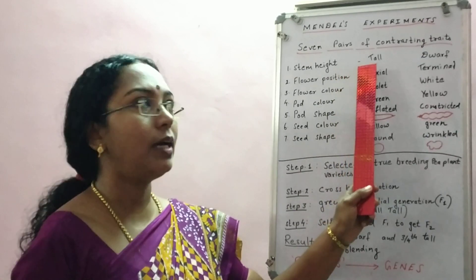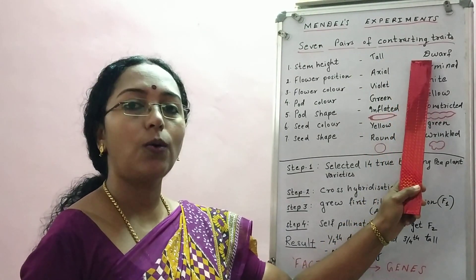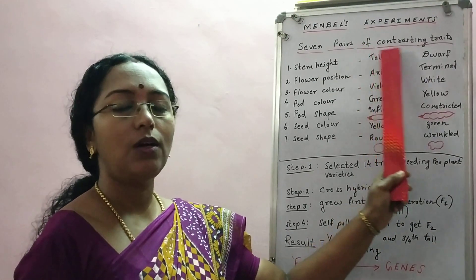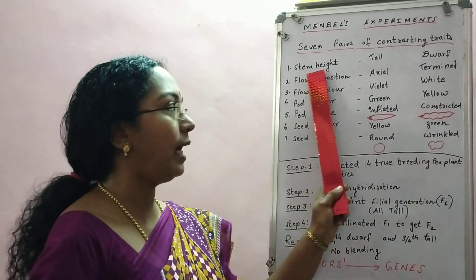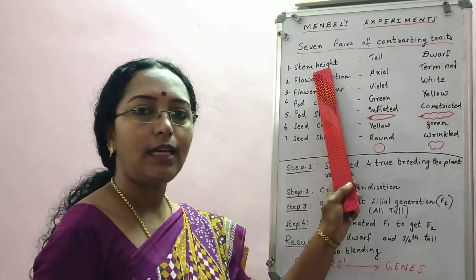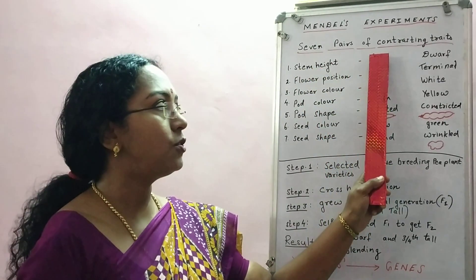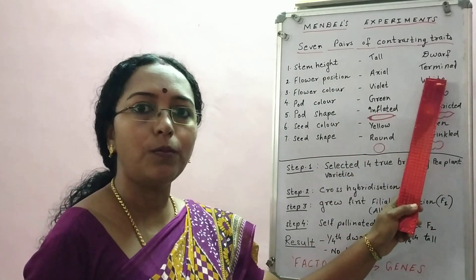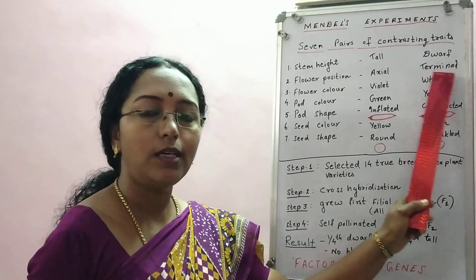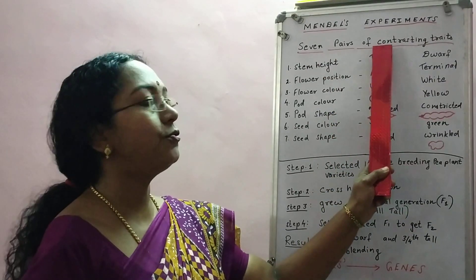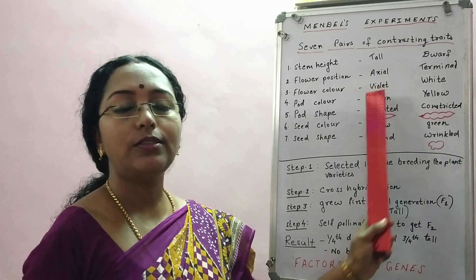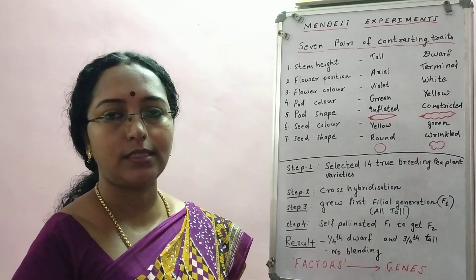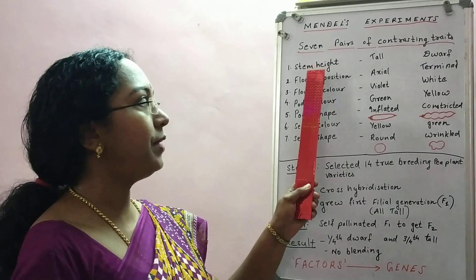For stem height, he observed that some plants were very tall and some were short or dwarf. So the trait 'height' has two forms: tall and dwarf. These forms are called pairs of contrasting traits. As mentioned previously, he took opposing traits — two opposing traits — and this is the explanation for that.